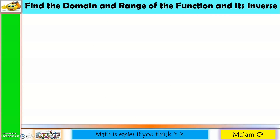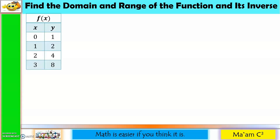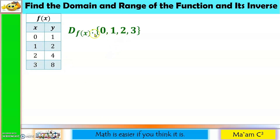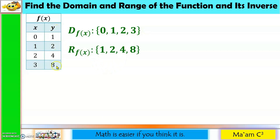Let's find the domain and range of a function and its inverse, starting with the easiest case: a table of values. For the domain, simply enumerate the values of x, separated by commas and enclosed in braces. Do the same for the range, but use the values of y.